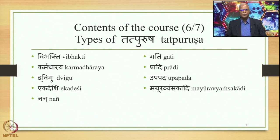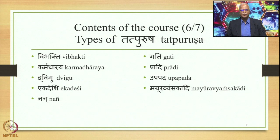These are some of the types of Tatpurusha compound — we will study each one in detail. We will deal with the Vibhakti Tatpurusha, a very big umbrella with further sub-classes of six Vibhaktis: Dhritya Tatpurusha, Tritya Tatpurusha, Chaturthi Tatpurusha, Panchami Tatpurusha, Shasthi Tatpurusha, and Saptami Tatpurusha. We shall study them using the Sutras of Panini primarily stated in 2.1.